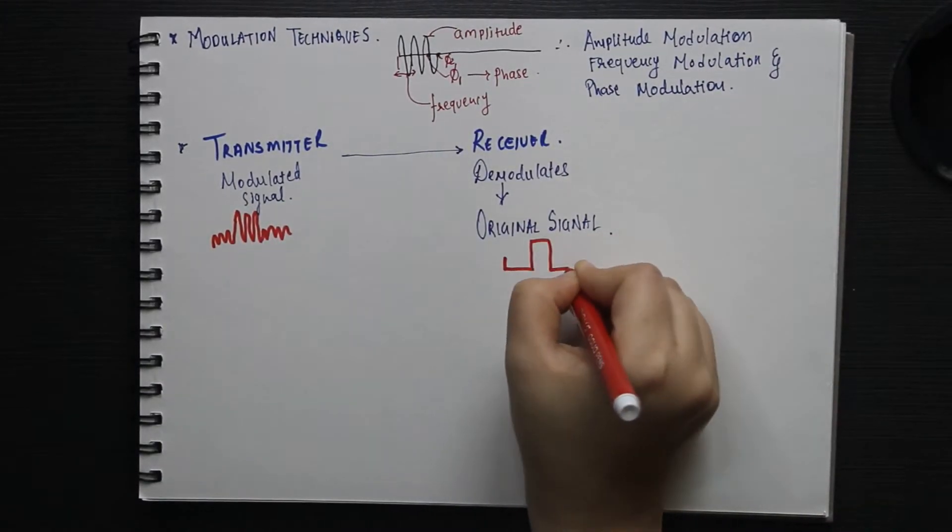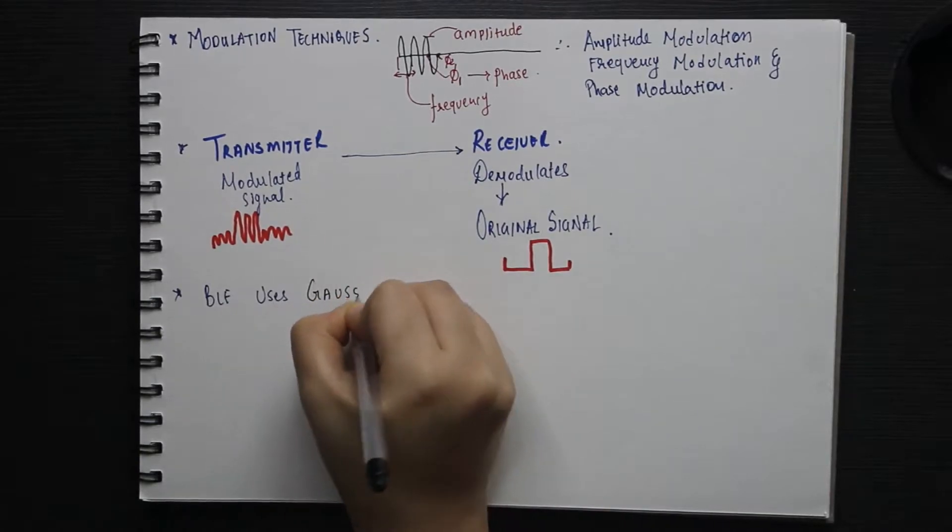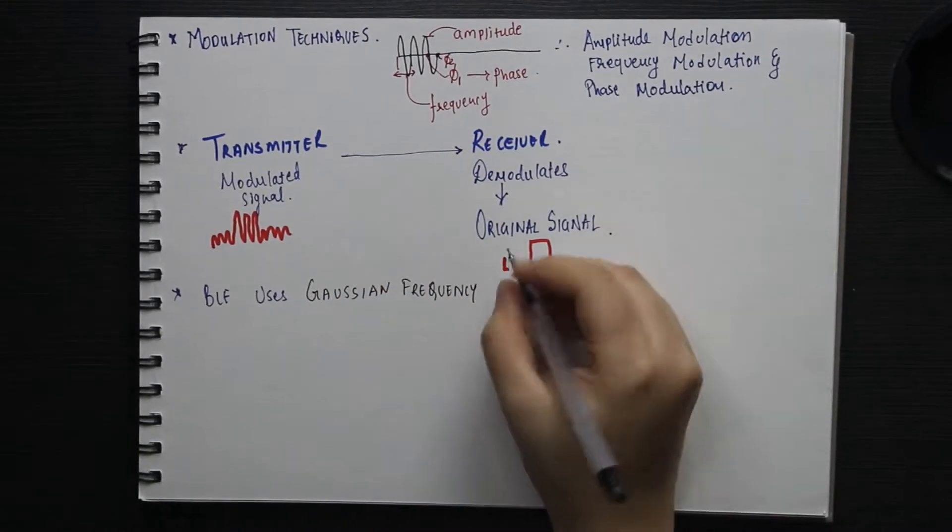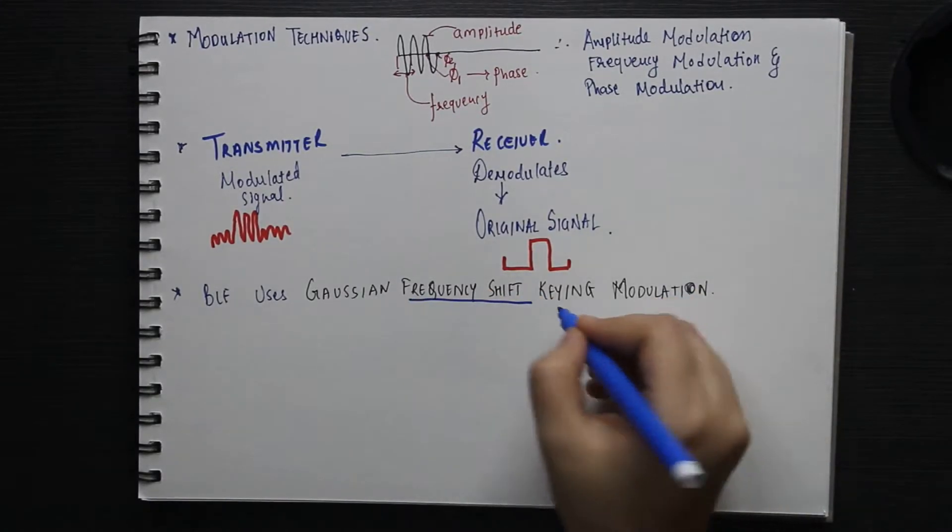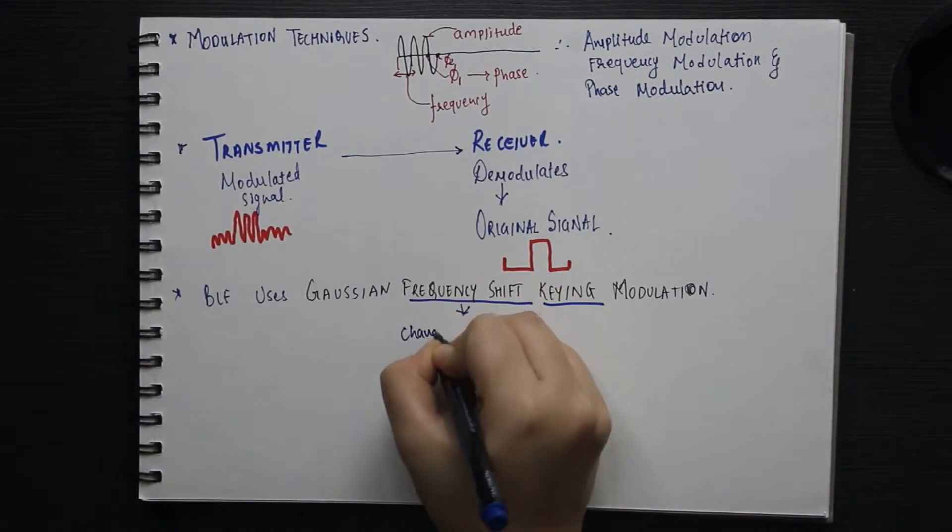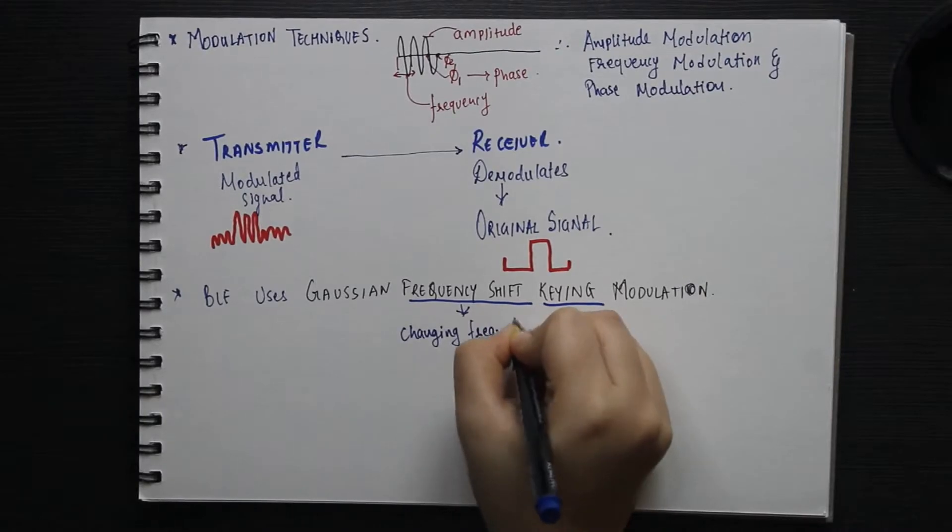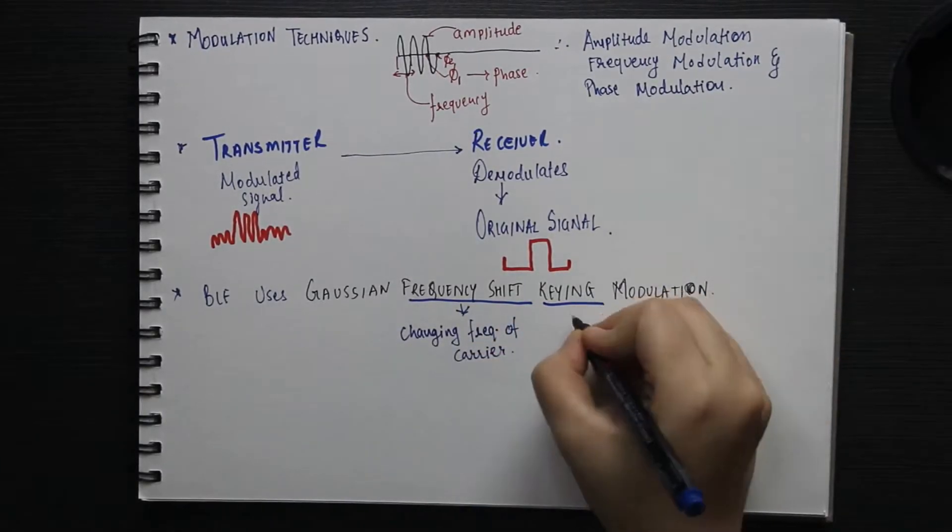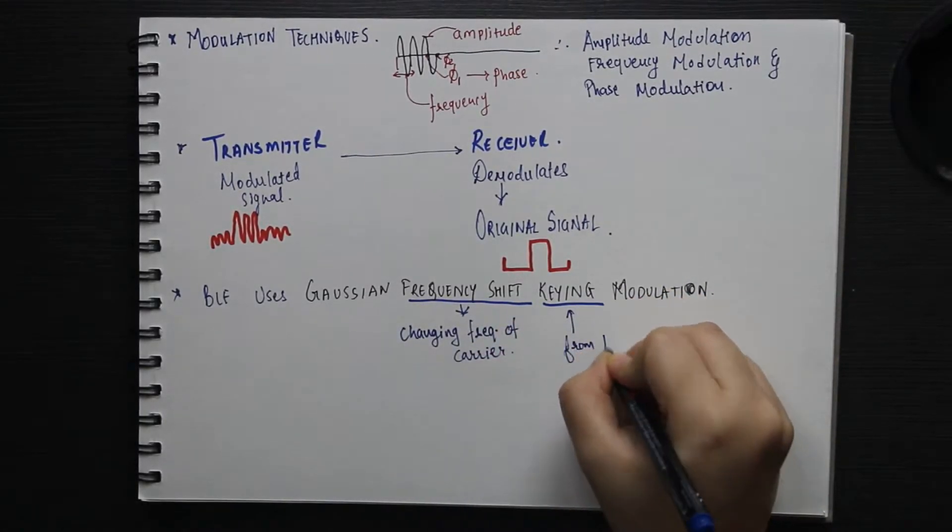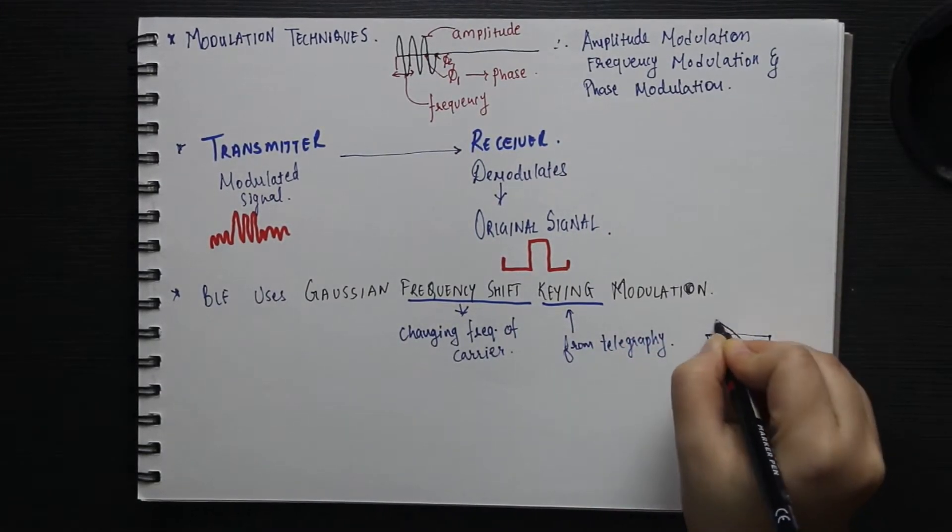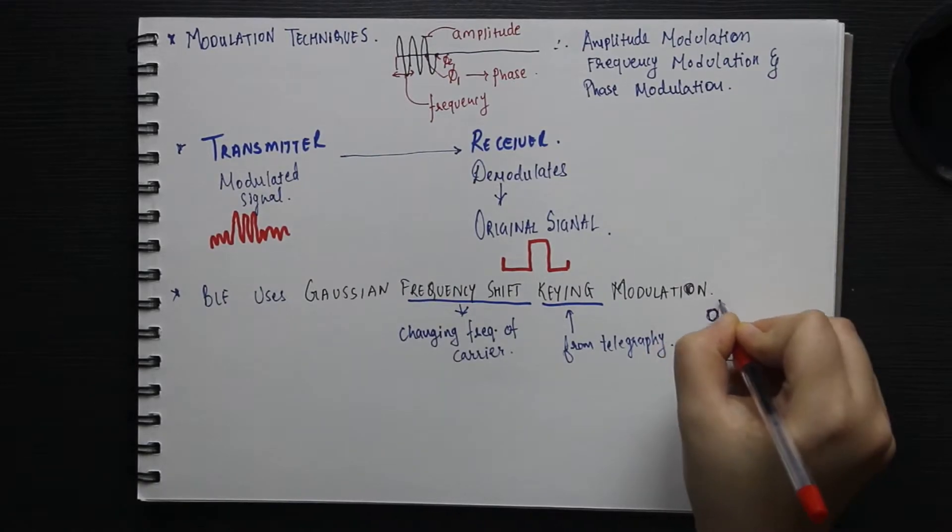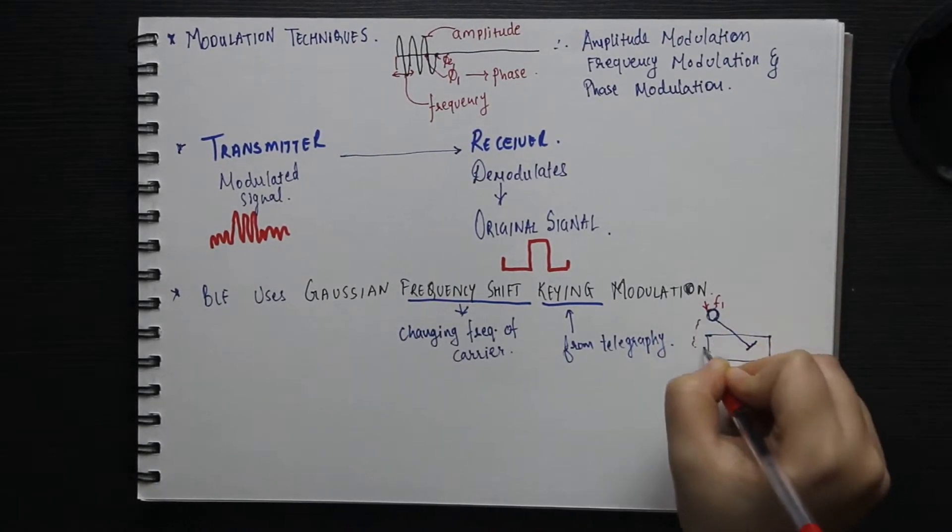BLE uses Gaussian frequency shift keying modulation technique. Let's first understand what is frequency shift keying. Frequency shift means we are modulating or shifting the frequency of the carrier and keying comes from the days of telegraphy. If the system were manually operated, you could say that each time the operator pressed the key, the frequency shifted by a known value.